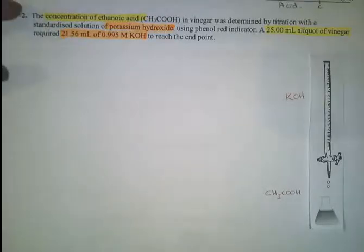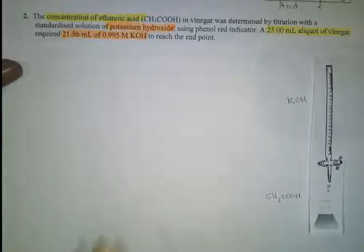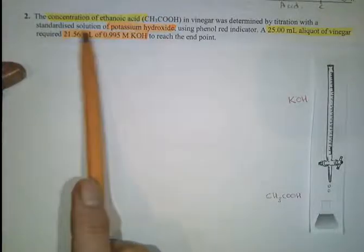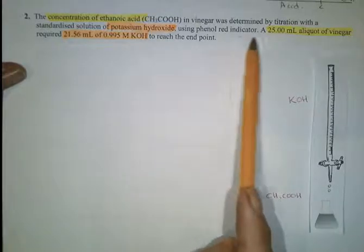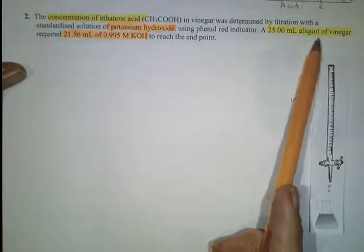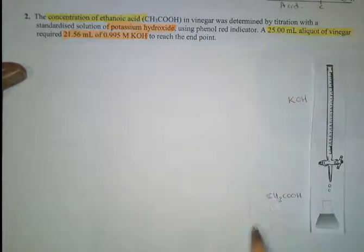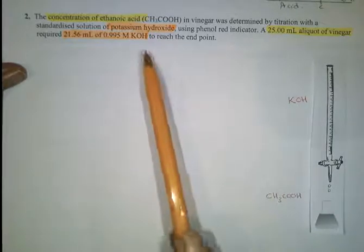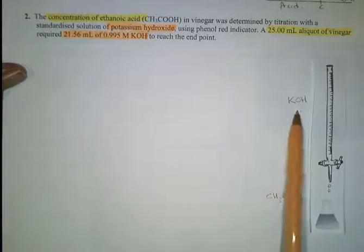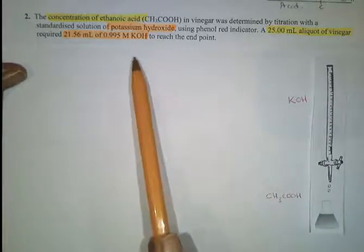The concentration of ethanoic acid in vinegar was determined by titration with a standardized solution. This is our known potassium hydroxide using phenolphthalein indicator. A 25 mL aliquot of the vinegar, the thing that we're looking for, the ethanoic acid, is in the conical flask and you've got your potassium hydroxide that you know the concentration of in your burette.